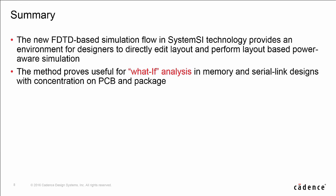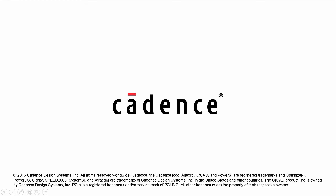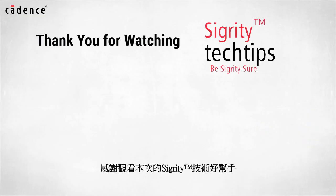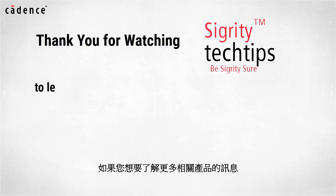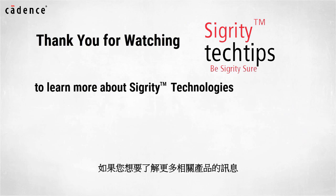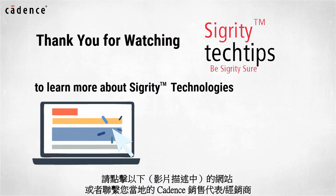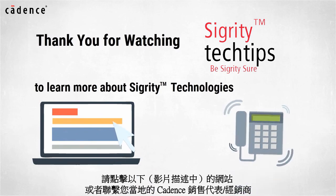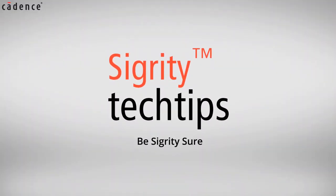总的来说，这个视频显示了在SystemSI中一个新的仿真工作流程，也就是使用基于时域有限差分方法的仿真器。它可以帮助设计工程师在系统级有效地进行针对高速总线和串行设计的假设分析。请不吝点赞、订阅、转发，打赏支持明镜与点点栏目。